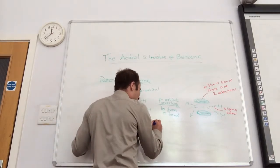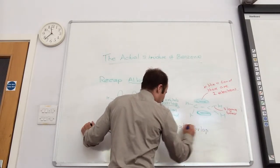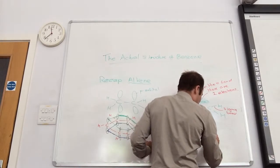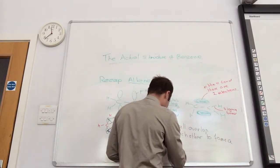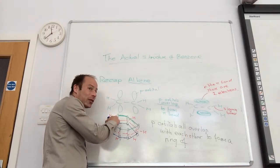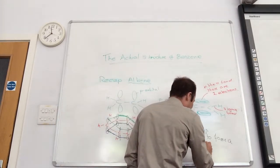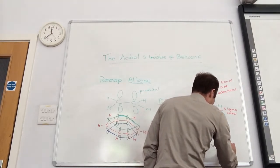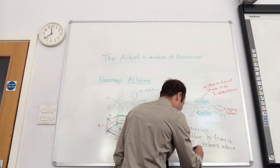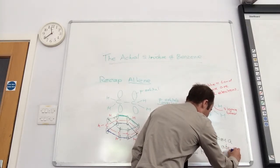So what we say is the p orbitals all overlap with each other to form a ring of, now how many electrons have I got in this? So each p orbital has one electron. Six, six electrons above and below the carbon sigma framework.